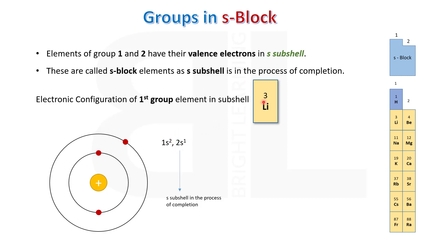Lithium, with atomic number 3, has 2 electrons in K shell and 1 electron in L shell. On writing its subshell configuration, we get 1s2, 2s1. You can observe that in lithium, S subshell is in the process of completion. Due to this reason, lithium is placed in S block elements along with hydrogen, sodium, potassium, rubidium, cesium, and francium.